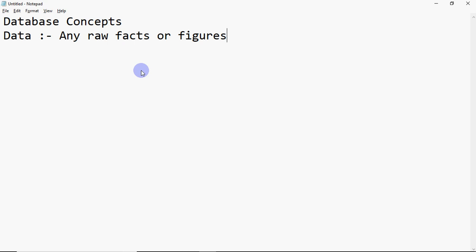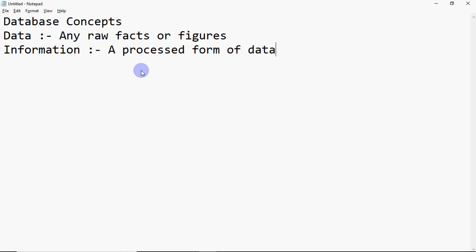But if I say Nitin scored 89 in class 12, that is information, which is a processed form of data. In the BCA entrance exam, which has multiple choice questions, you can be asked: 'A processed form of data is called?' Then option A could be information, option B something else, option C could be program. Obviously you have to choose option A as the answer.